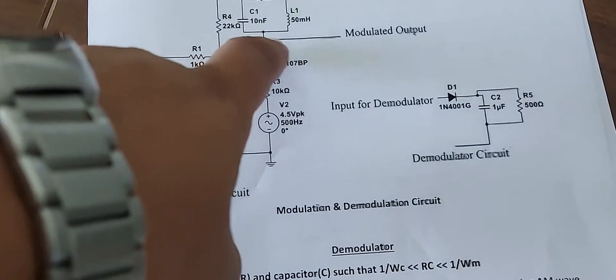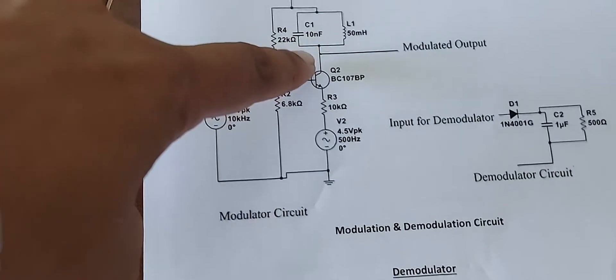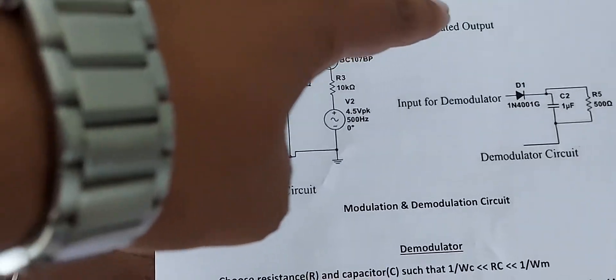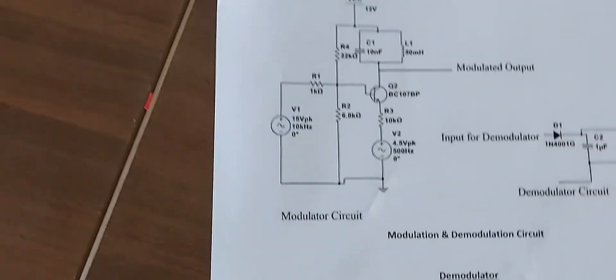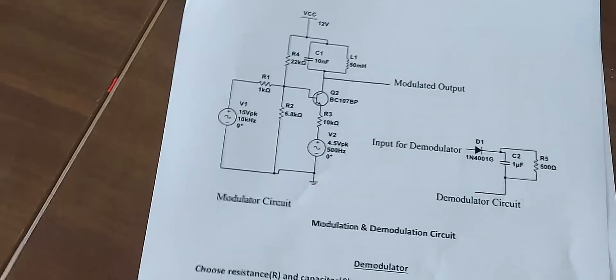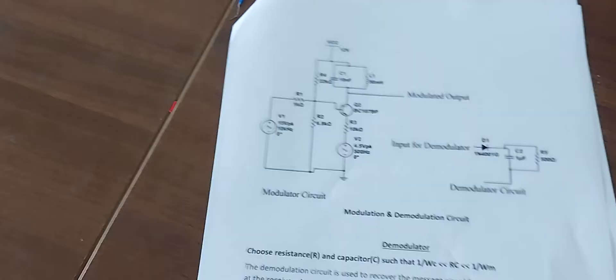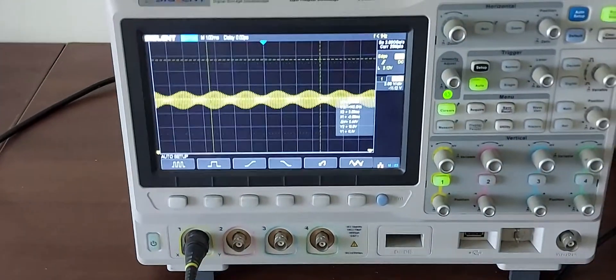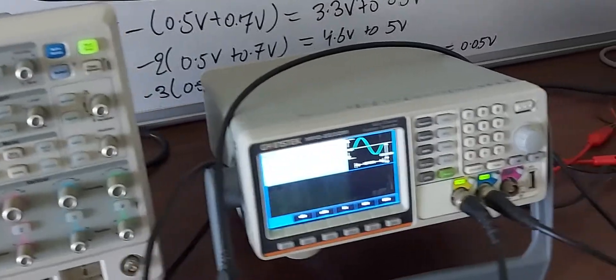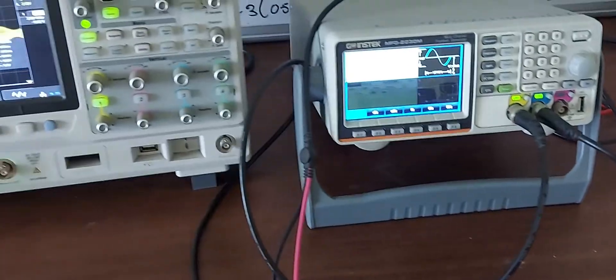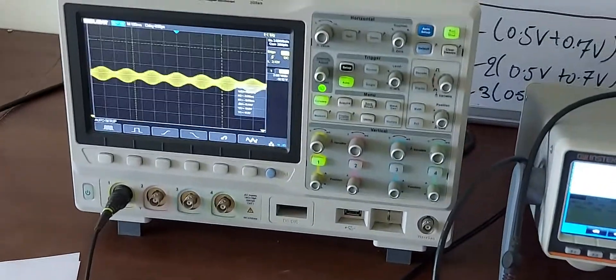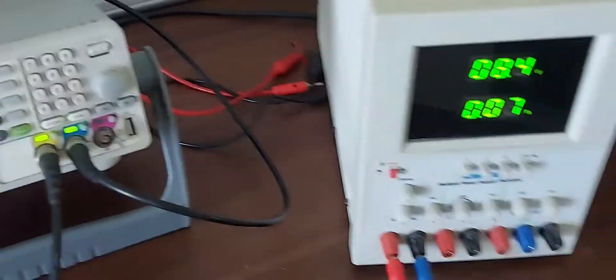We will take the output from the collector of the NPN transistor and observe it on a CRO. We have several devices to generate and observe signals, as shown in previous sessions.